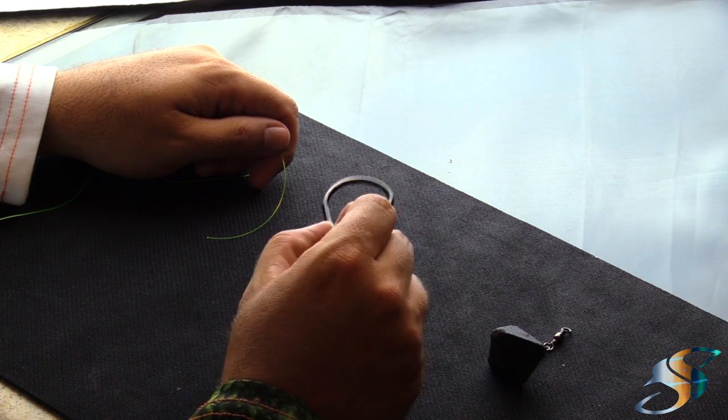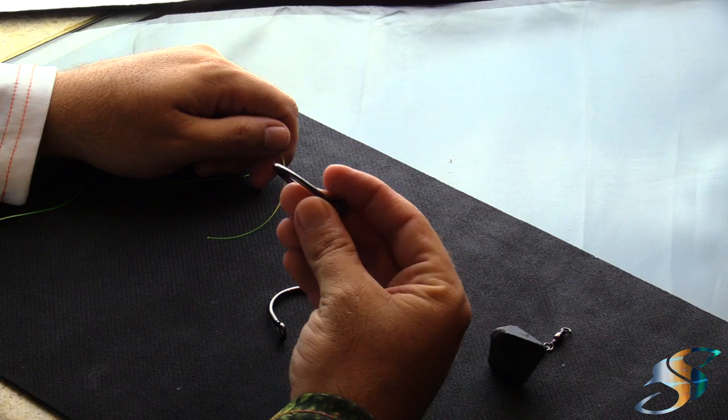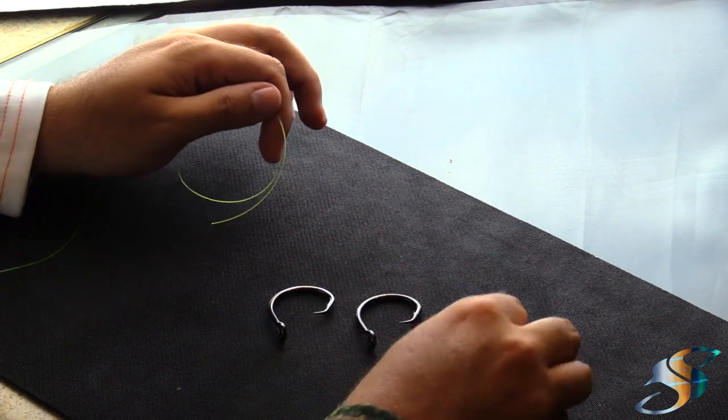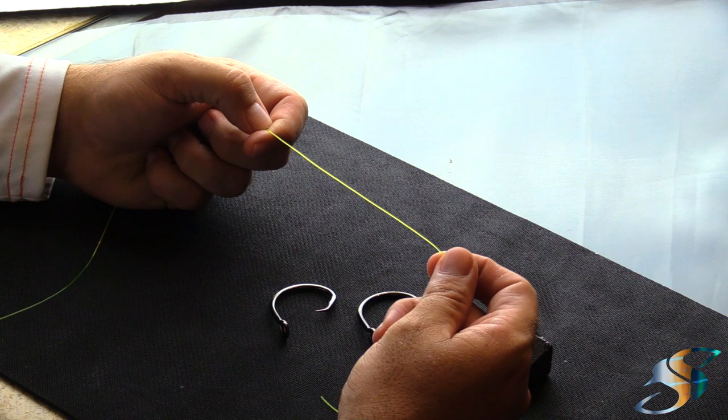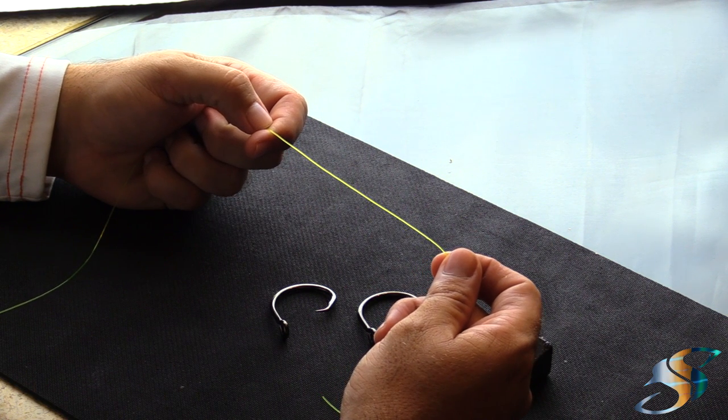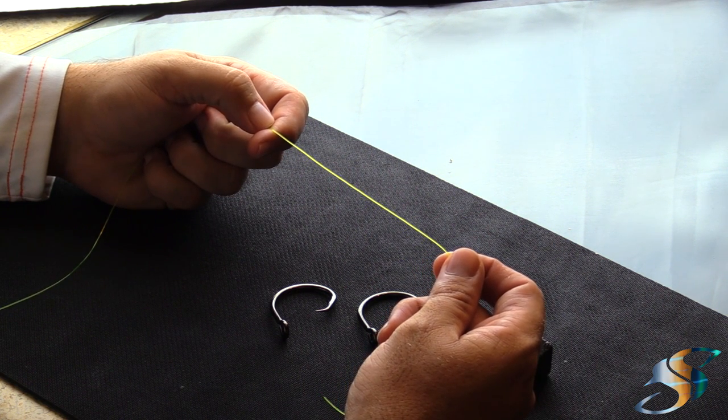First things first: you want to cut off anywhere from three to five feet of leader material, and that's going to be dependent on how far you want to separate your hooks.